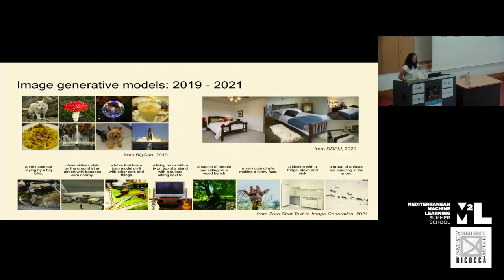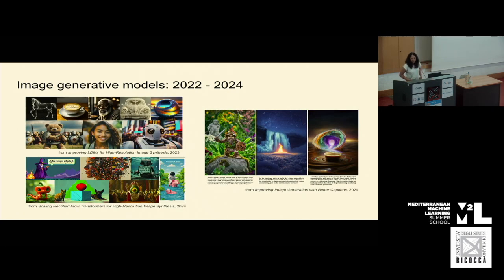It was a huge advancement for the field and the generations are quite decent, although if we take for example the first one — a very cute cat laying by a big bike — sometimes some of the concepts get sort of entangled with each other. But then moving forward, the models we've seen over the last year and a half have boosted the quality of generations even more impressively. Here are examples of some recent text-to-image models where the level of control is through the text prompt, and the level of detail and resolution is quite impressive.